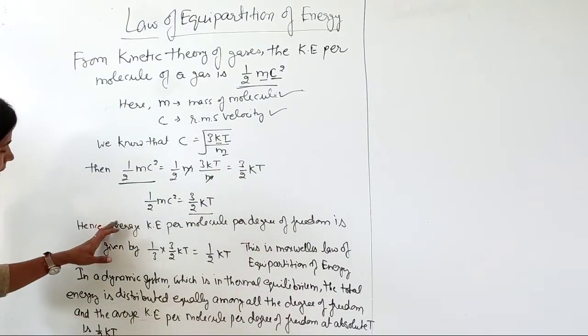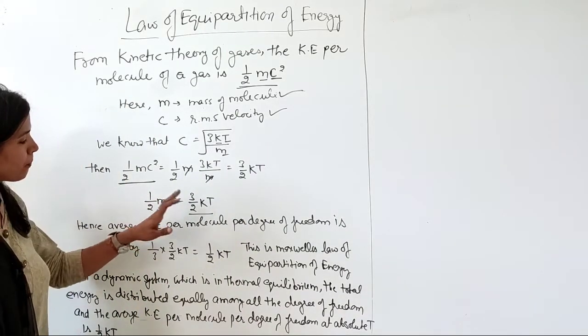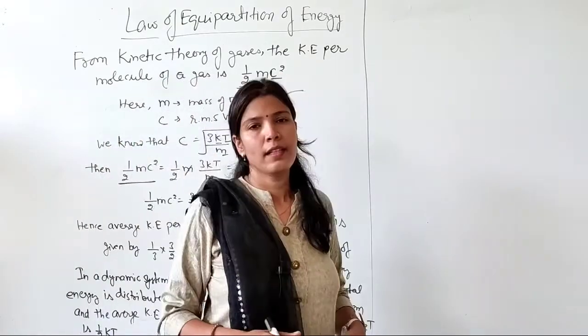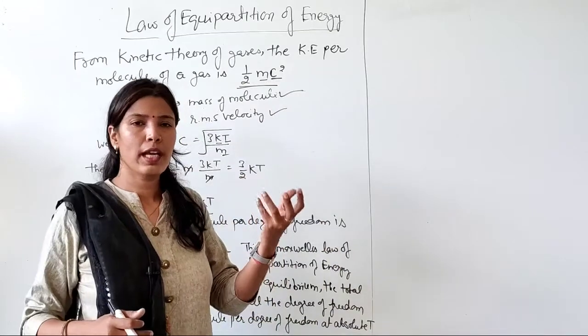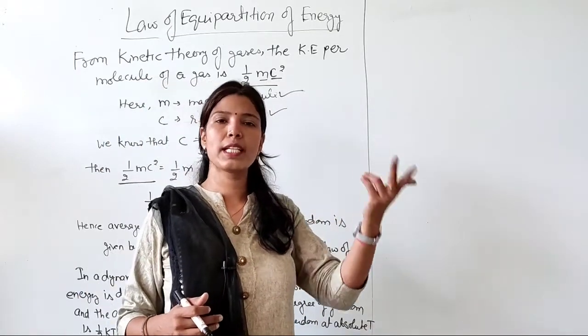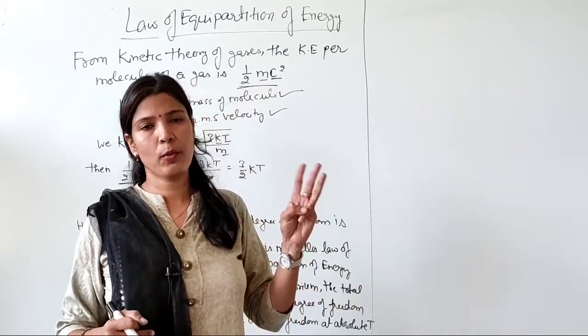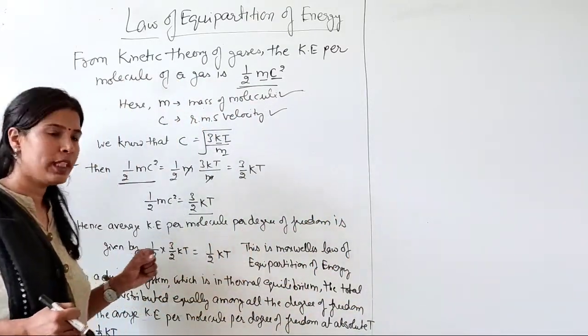Now, average kinetic energy per molecule per degree of freedom. We are talking about per degree of freedom here. If we have a molecule with only translatory motion, then in case of translatory motion, that molecule will have 3 degrees of freedom.